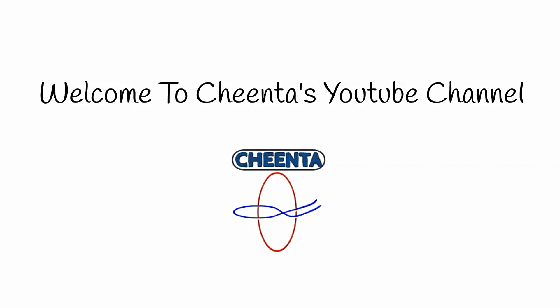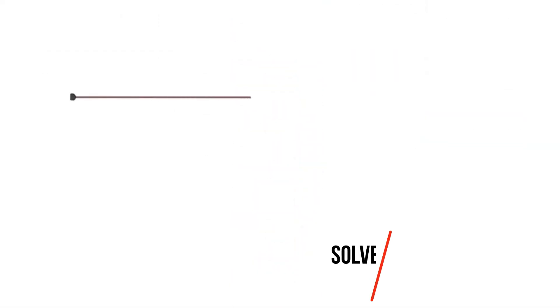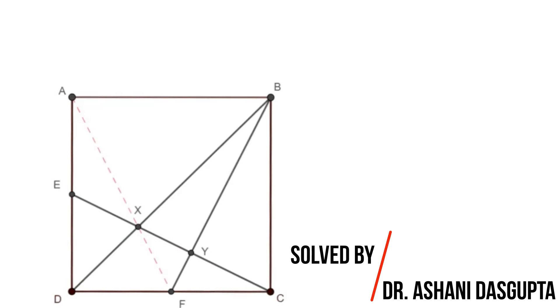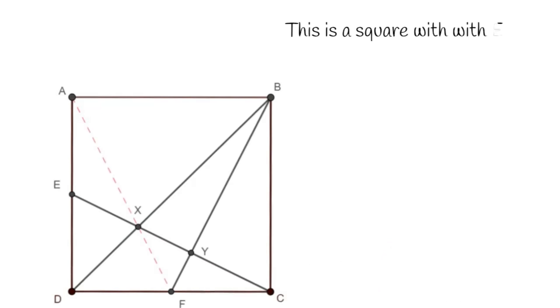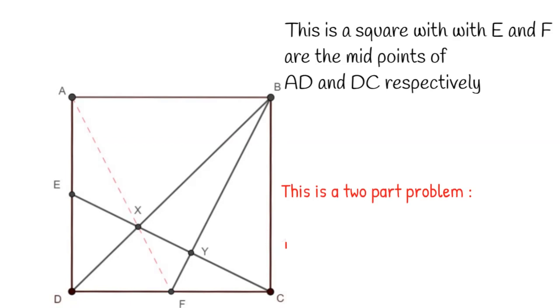We will start this year with a geometry problem. Let us see the statement of this problem. We have the square ABCD with E and F as the midpoints of AD and DC respectively.